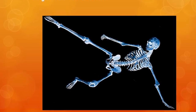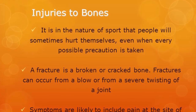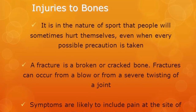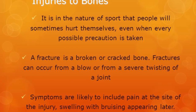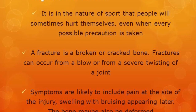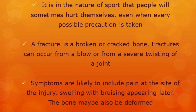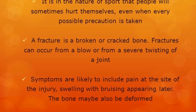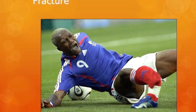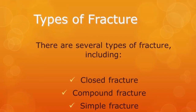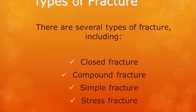Moving on to injuries to bones — it's the nature of sport that people get injured, sometimes even when every precaution is taken. A fracture is a broken or cracked bone, which can occur from a blow or from severe twisting of a joint. Symptoms include pain at the site of the injury, swelling or bruising, and the bone may also be deformed. The four types of fracture you need to know are: a closed fracture, a compound fracture, a simple fracture, and a stress fracture.